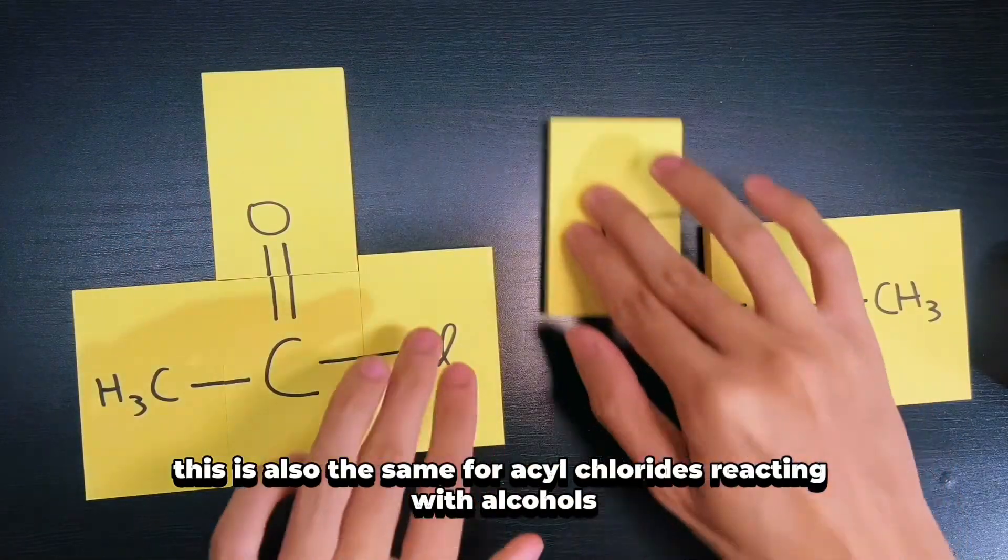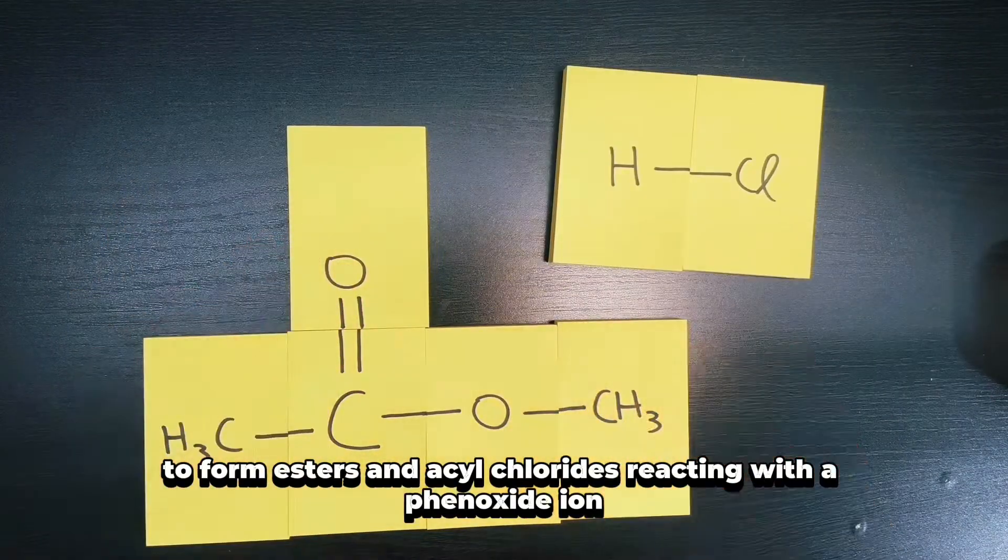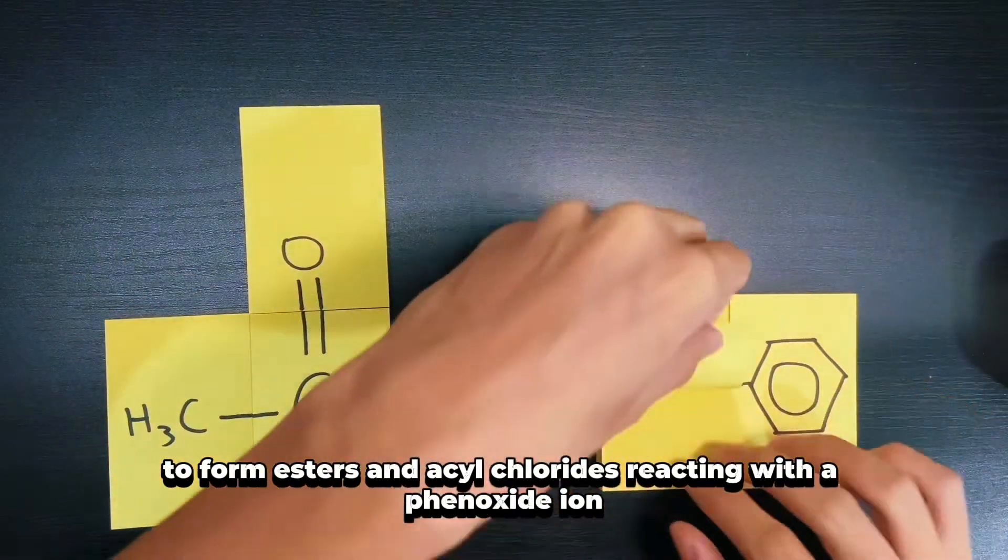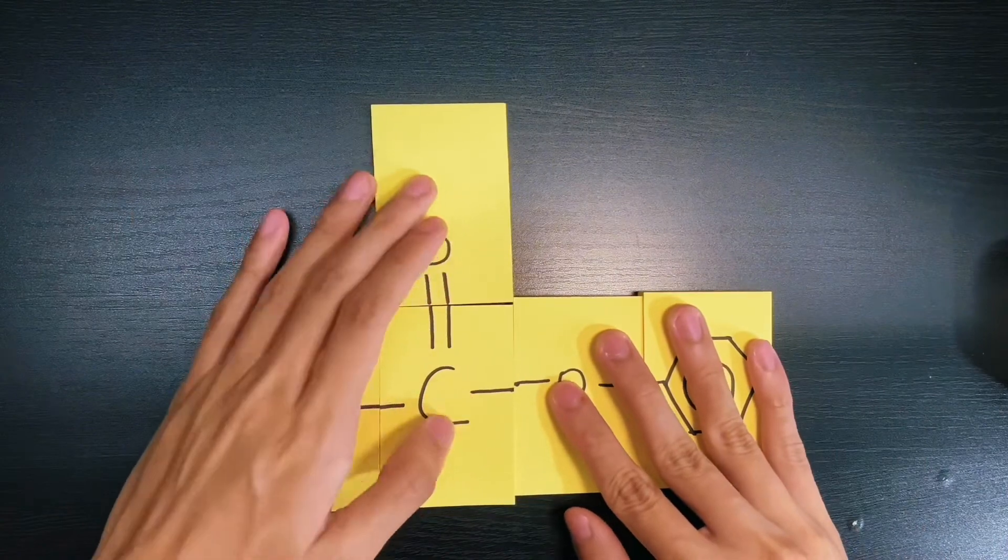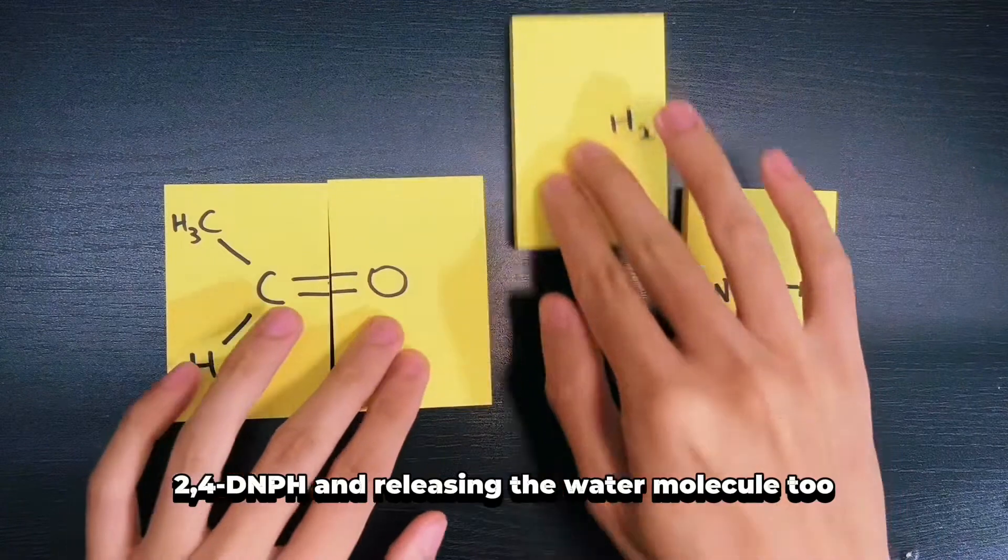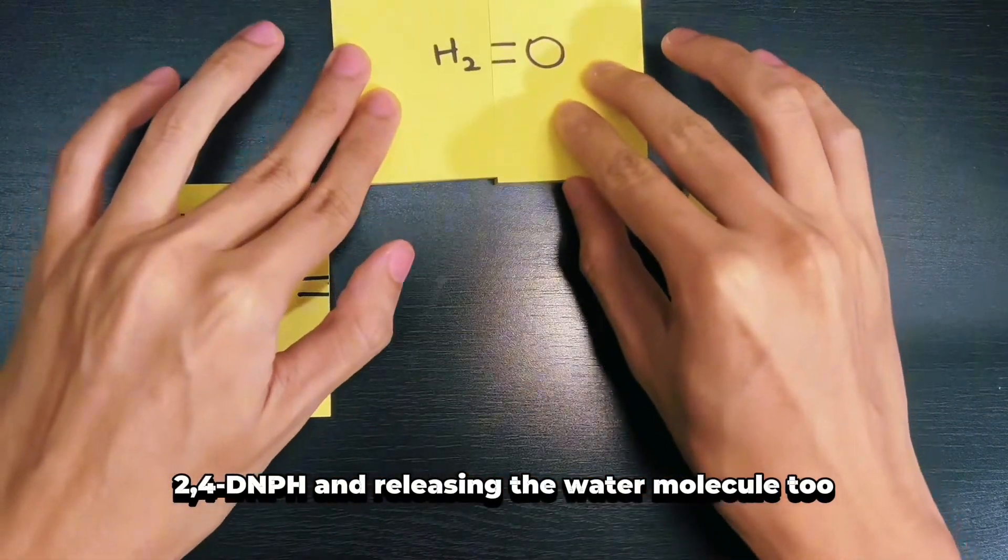This is also the same for acyl chlorides reacting with alcohols to form esters and acyl chlorides reacting with a phenoxide ion. And lastly, don't forget about aldehyde and ketones condensing with 2,4-DNPH and releasing the water molecule too.